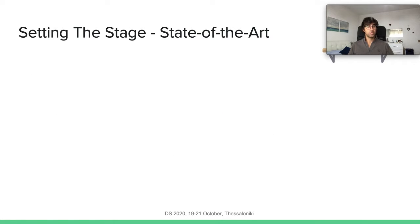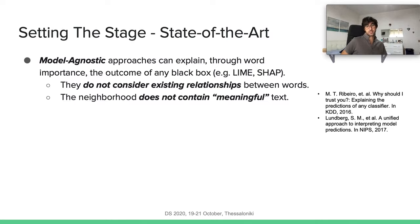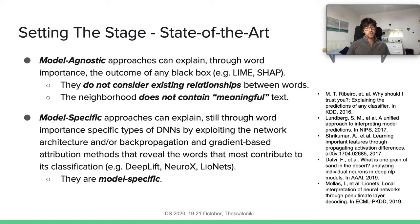With respect to the state of the art, we can find two big families. The first is model-agnostic methods such as LIME and SHAP, which have two inconveniences: they do not consider existing relationships between words, and the generated neighborhood does not contain meaningful text. The other family consists of model-specific approaches that can explain only specific types of deep neural networks. We aim for a model-agnostic approach that generates a proper neighborhood.